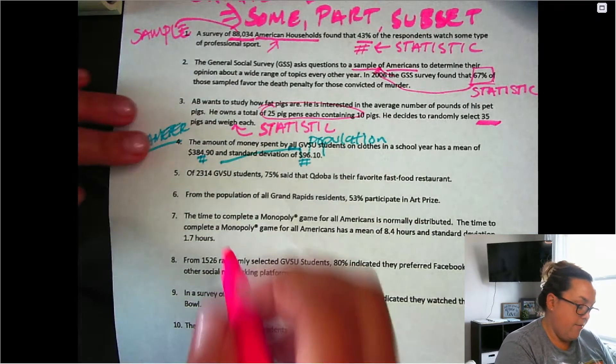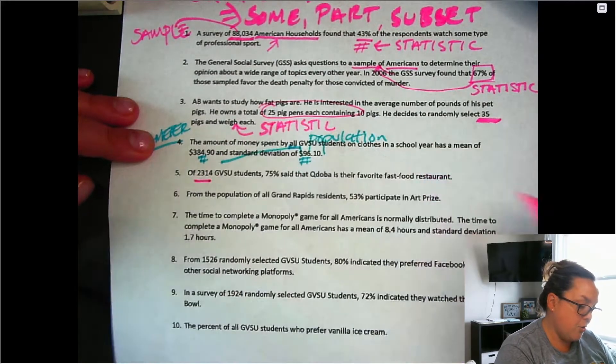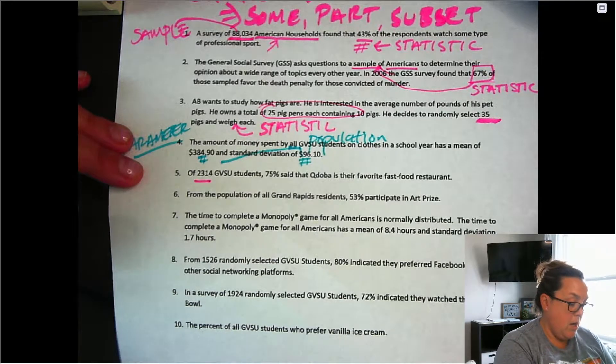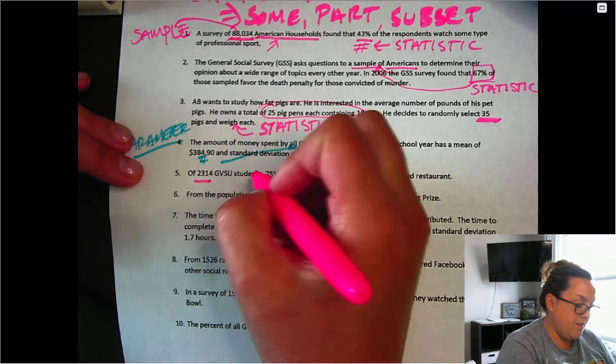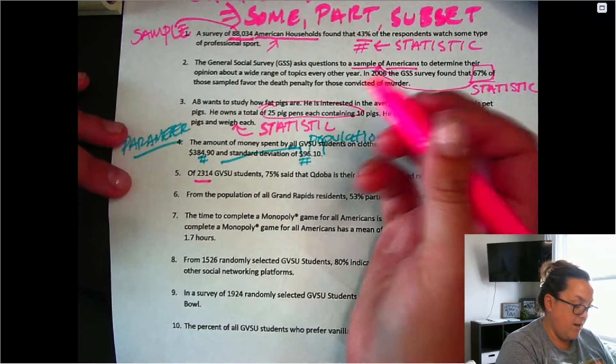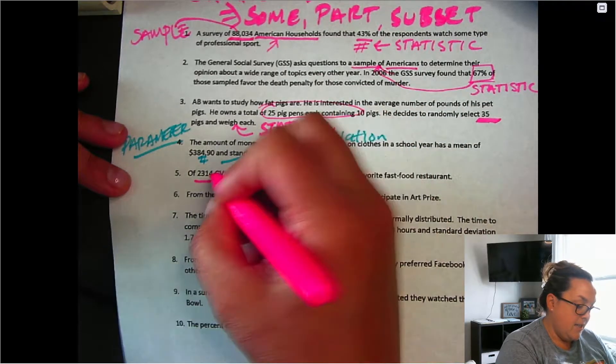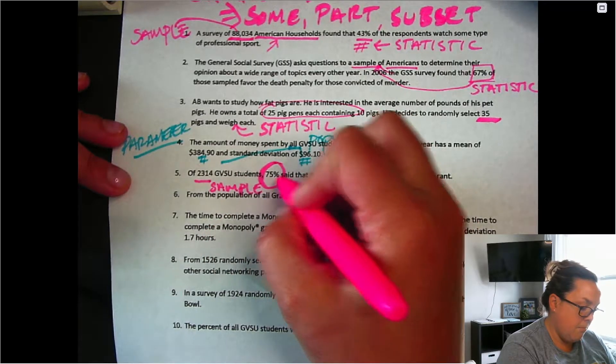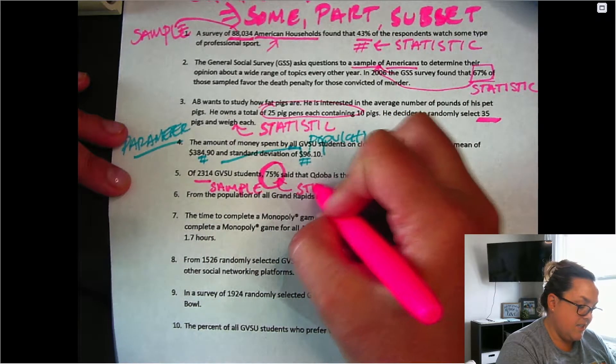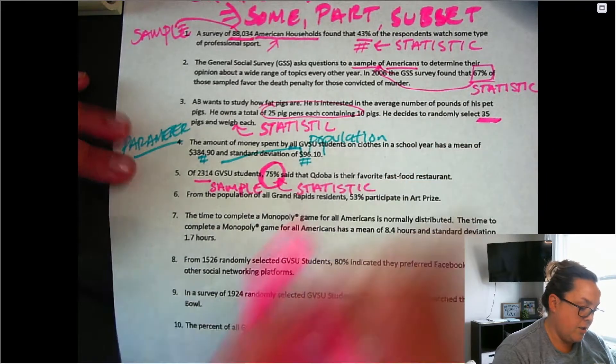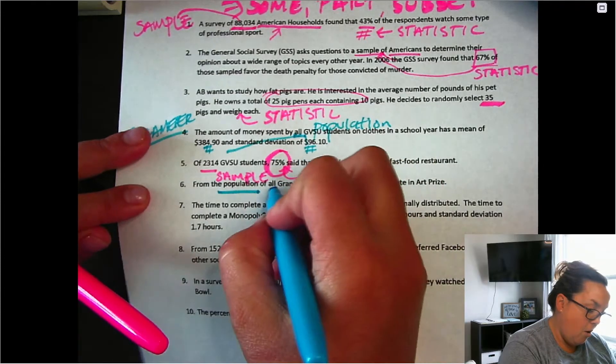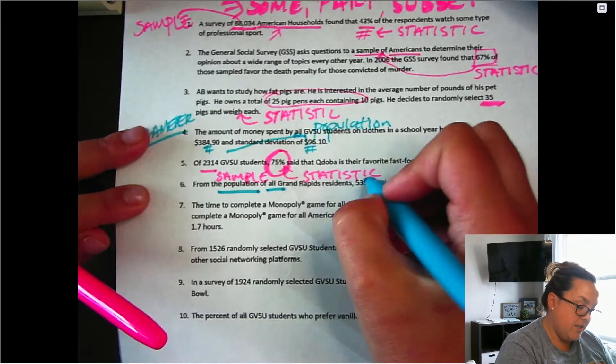Next, we have a sample of 2,314 and I just gave it away. But we know that the GBSU student body is over 30,000. So that means that this is a smaller group. So that's a sample, which means this number here is a statistic because it's referring to that smaller group.